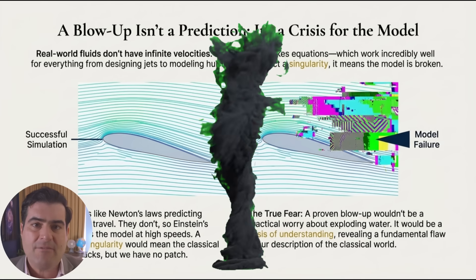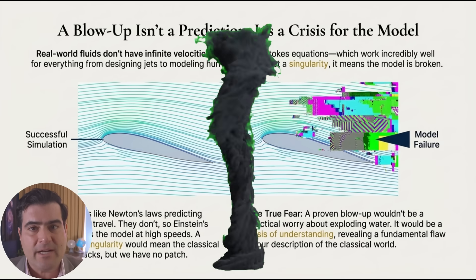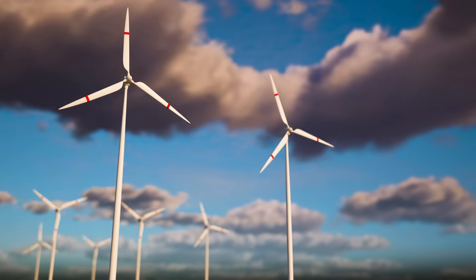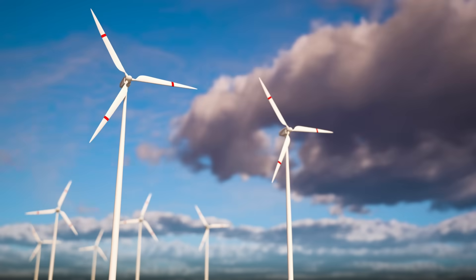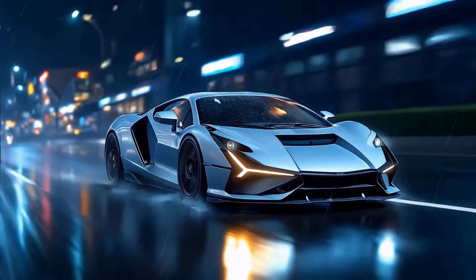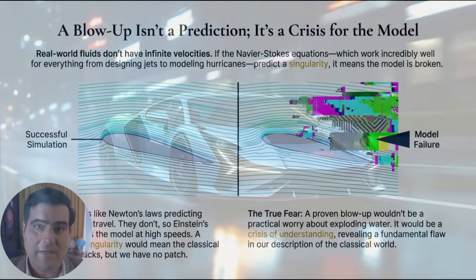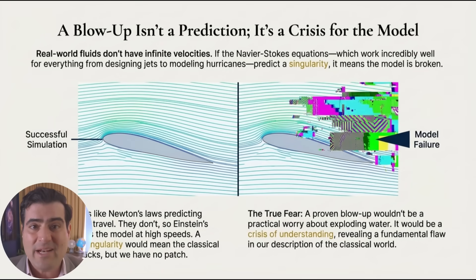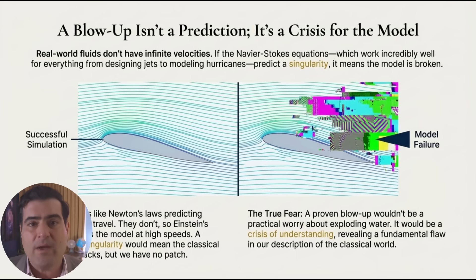We use these equations every day to engineer technology, to design airplanes and wind turbines, and even to mimic reality in video games, so you can get that extra millisecond of frag speed. But the frightening truth is that for a turbulent flow, we can only approximate the chaos. We cannot solve it exactly. We literally do not know if the math holds together or whether it breaks down when the water gets rough.